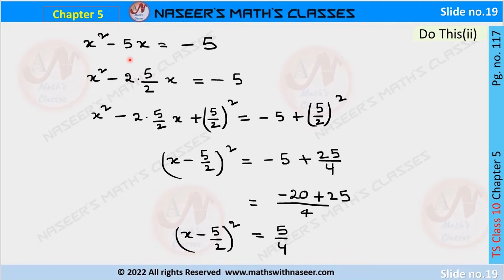Here the 2ab term requires us to write 5x as 2·(5/2)·x. Since we do not have the completing square term, we add the b² term where b = 5/2, so we add (5/2)² on both LHS and RHS. This gives x² - 2·(5/2)·x + (5/2)² = -5 + (5/2)².